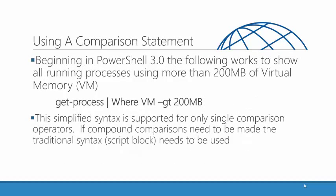Beginning in PowerShell 3.0, we got this simplified syntax, sometimes called the comparison statement syntax. This cmdlet does exactly the same thing as the previous one. It retrieves all the running processes. We see 'where' — which is of course an alias for Where-Object — but then we just type VM -GT 200MB. It's still looking at each running process, examining the virtual memory property, and deciding if we care about it. But you'll notice the syntax is much simpler. They both work. If I'm running PowerShell 3.0, I get the advantage of being able to use this simplified syntax — basically less typing, which is a good thing.